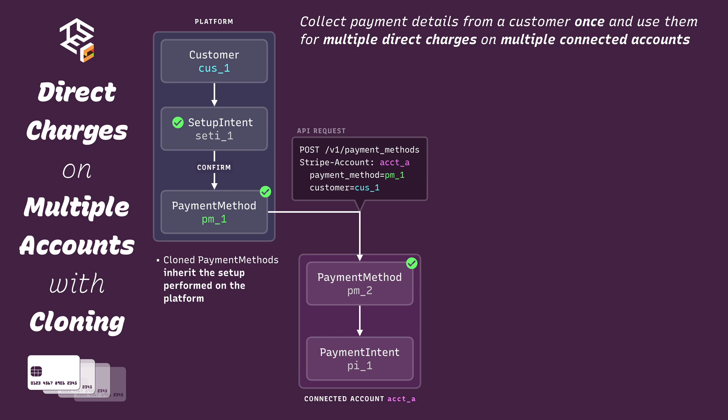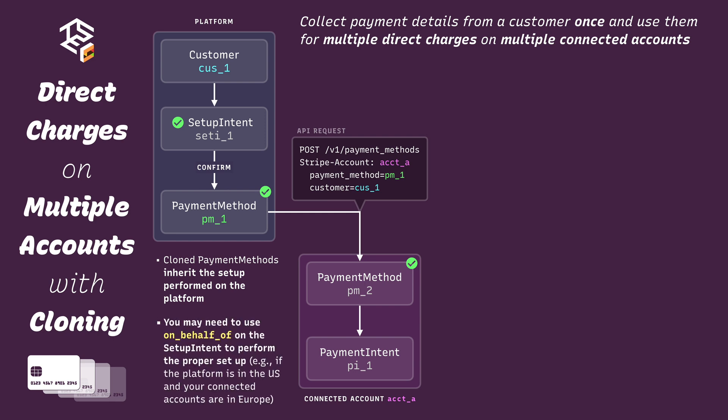One thing to keep in mind here are the countries of the platform and connected accounts. You may need to use OnBehalfOf on the setup intent to properly set up the payment method for use with your connected accounts. For example, if your platform account is in the United States, where 3D Secure rarely or never happens, the setup performed by the setup intent will likely not prompt for 3D Secure authentication and will thus be insufficient if you want to make a direct charge on a European connected account where SCA is enforced. If you're going to create direct charges in a country that differs from your platform account, you can use OnBehalfOf on the setup intent to specify a connected account in the same country where the charges will be made to ensure the proper setup is performed.